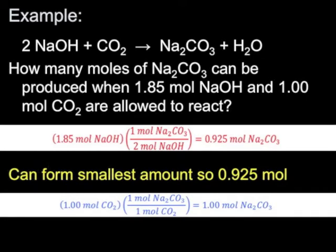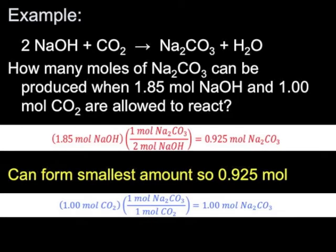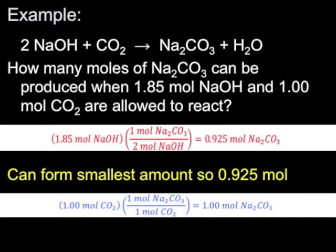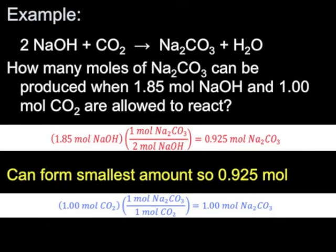We attempt these problems by going from mass to moles, then moles of one species to moles of another, and back to mass if necessary — but we do that twice, treating each reactant individually, then select the smallest result. That's the amount actually formed.